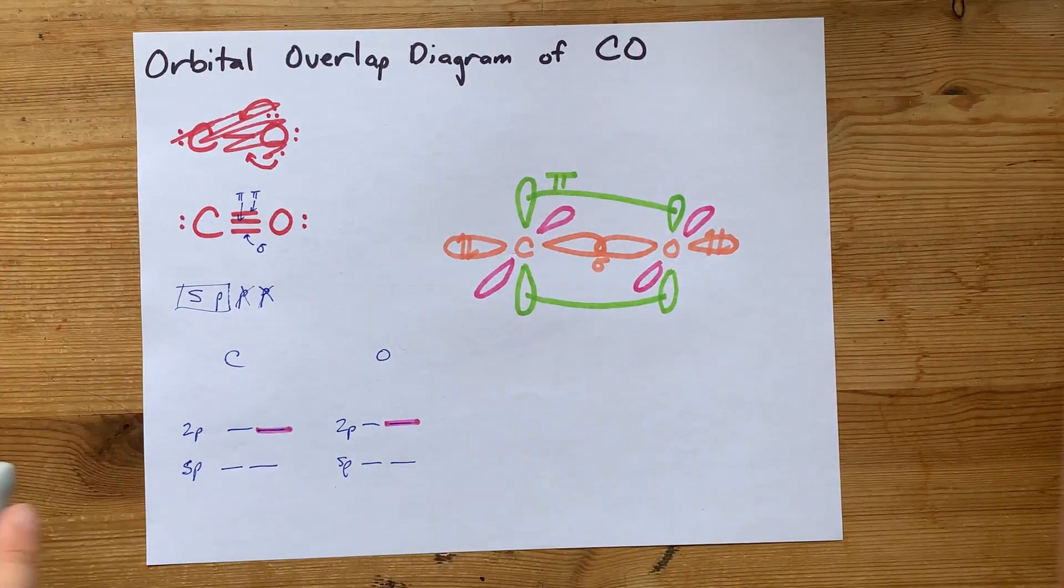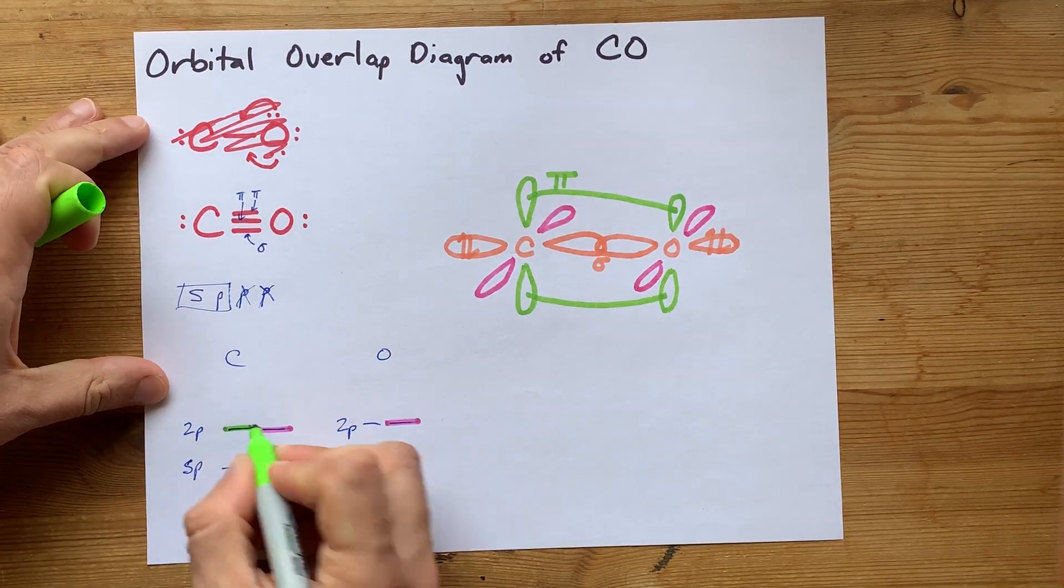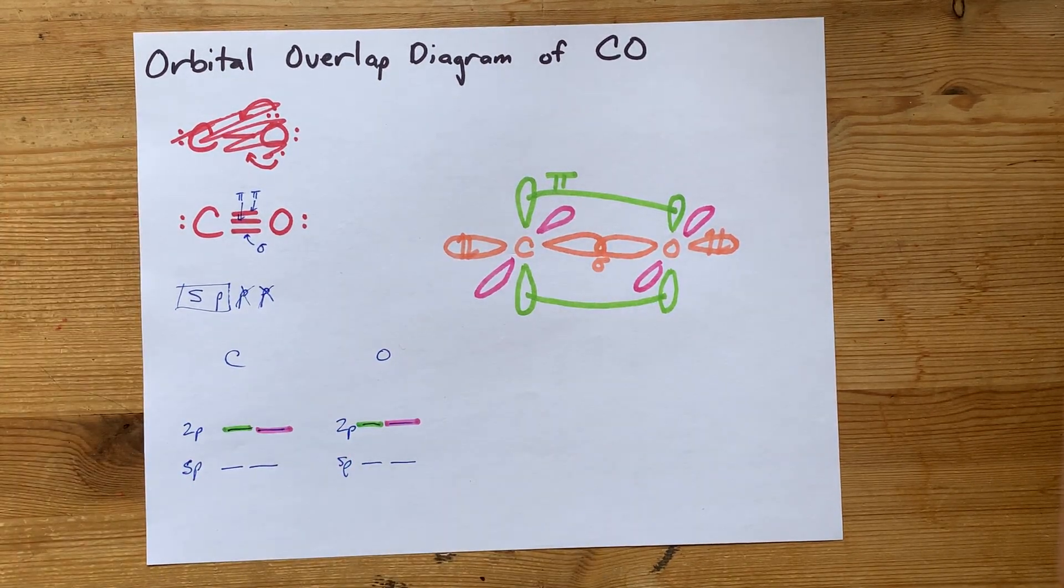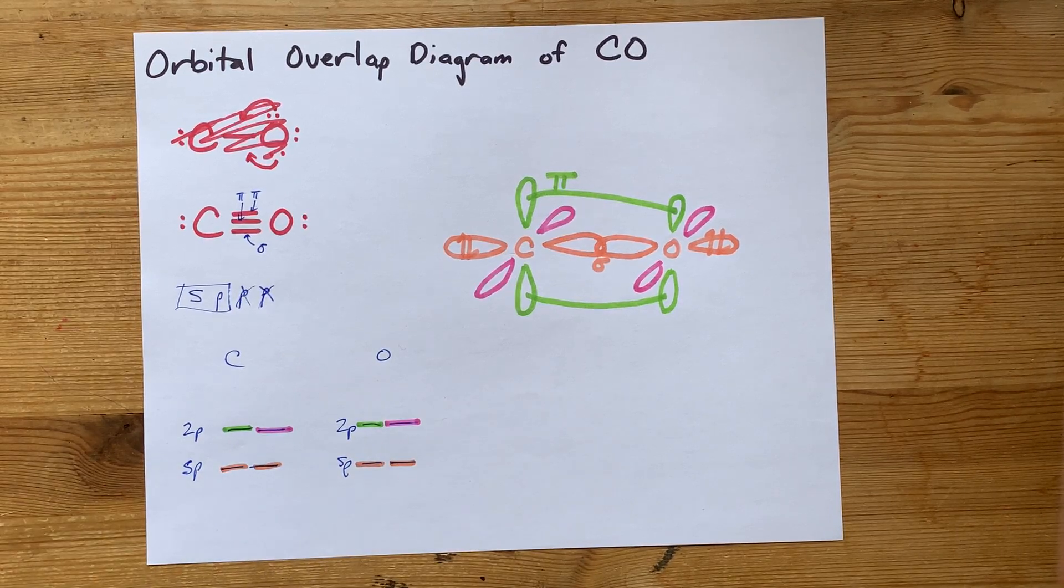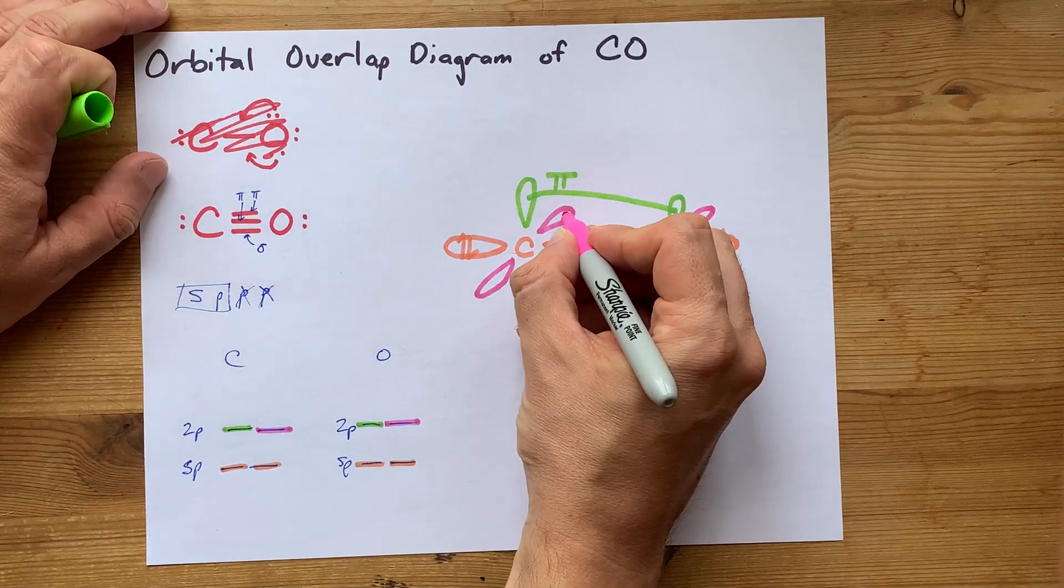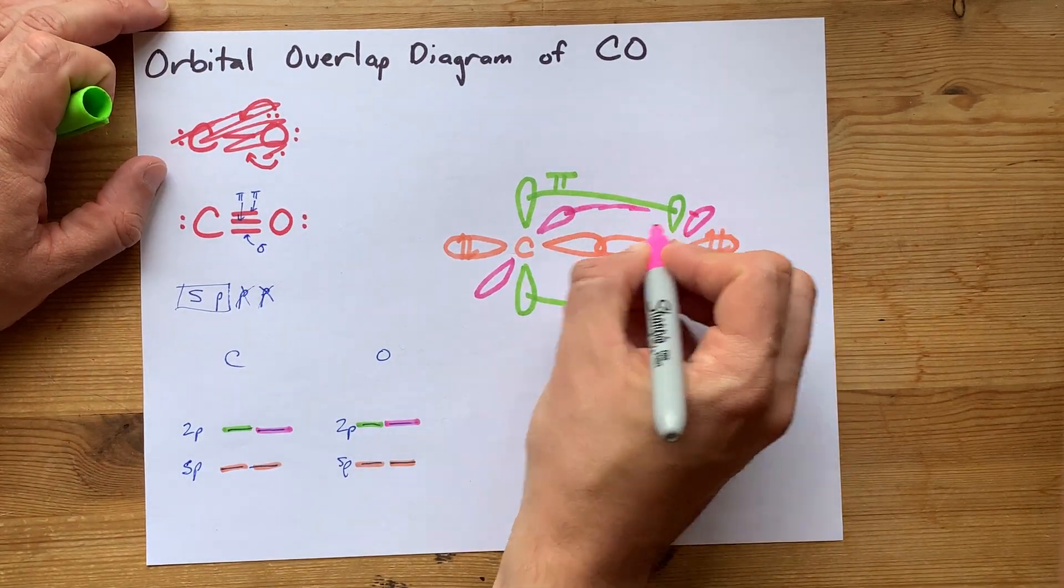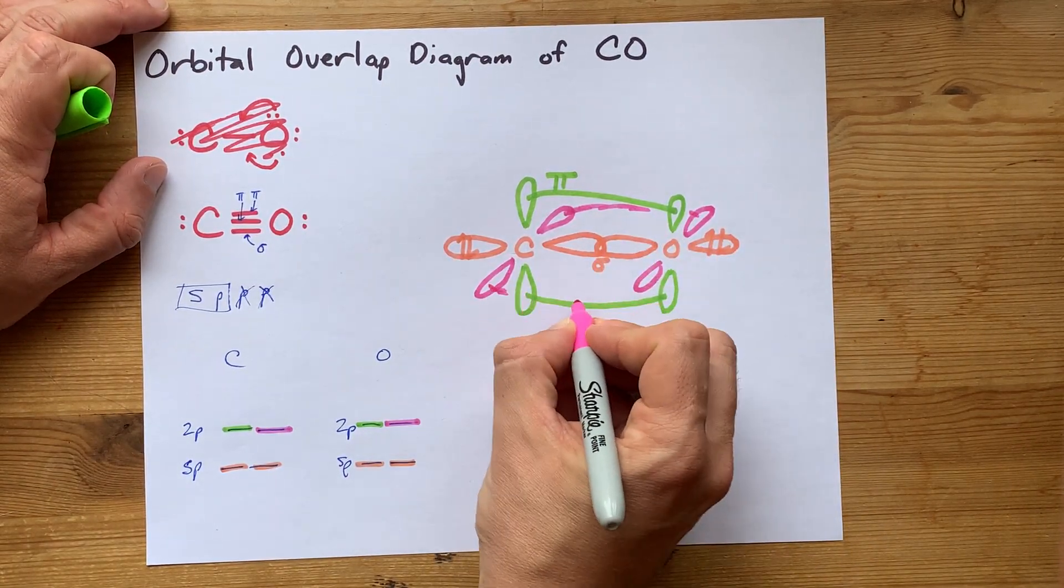That's another one of the 2P orbitals. In fact, I'll highlight that for you. Those are the pinks. Those are the greens. And then these are both orange. I guess I could have been more careful about that, but that's okay. And then there's a side-by-side overlap here, like front to back.